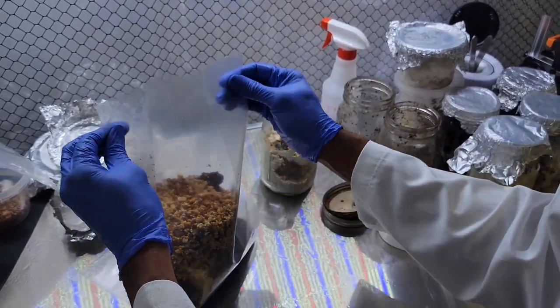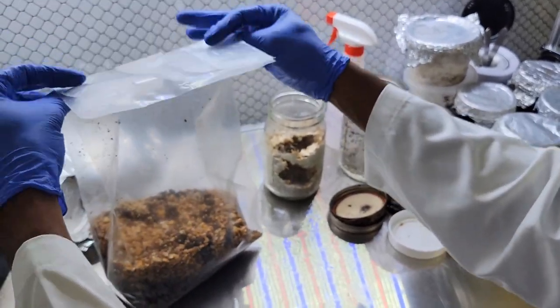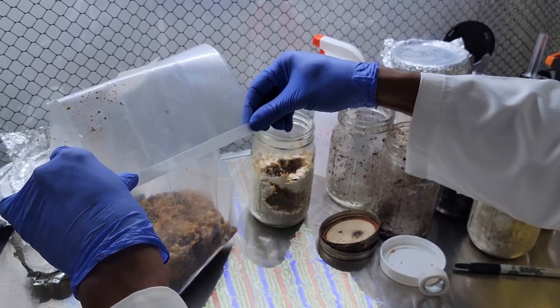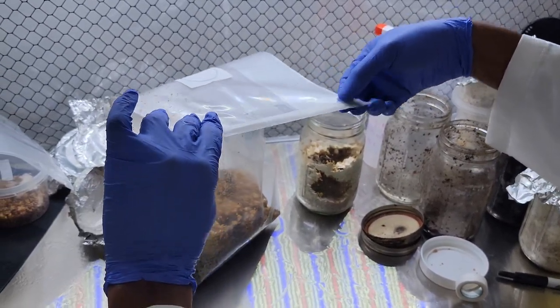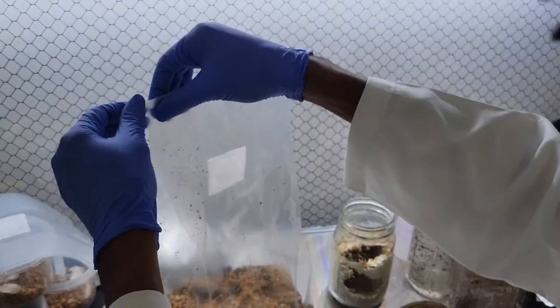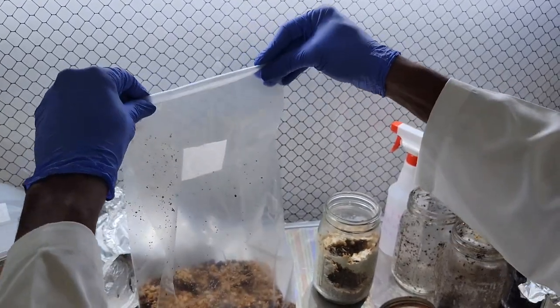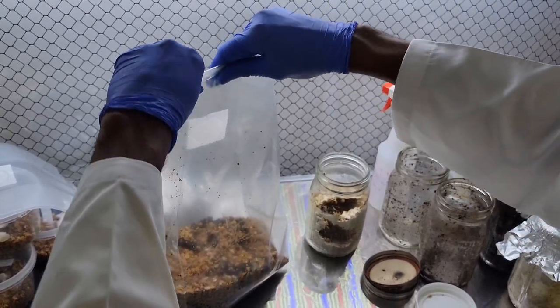You can see I'm doing a one-to-two ratio, one being the grain spawn and two being the substrate. The substrate being used here is called master's mix. It's 50% soy hulls and 50% oak pellets. Soy hulls help get a better yield and we use that for a lot of gourmets. This is lion's mane.